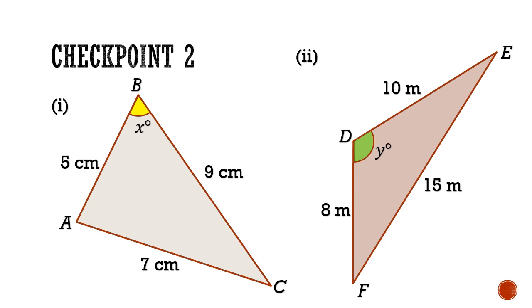Moving on to checkpoint 2. In these two given triangles, find the unknown angles x degrees and y degrees. Pause the video here and give these two questions a good try.